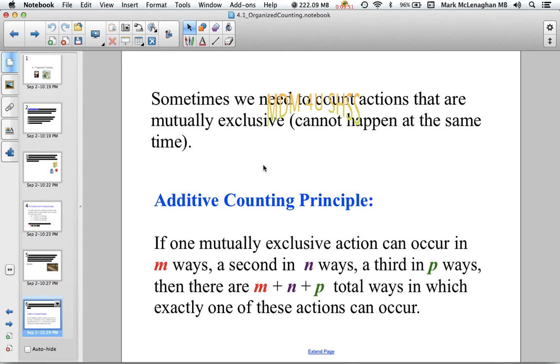Sometimes we need to count actions that are mutually exclusive, so they can't happen at the same time. We can use what we call the additive counting principle. If you have more than one action and you have to choose one action and not all of them, then you can find the total number of choices by adding up all possible choices for each stage.